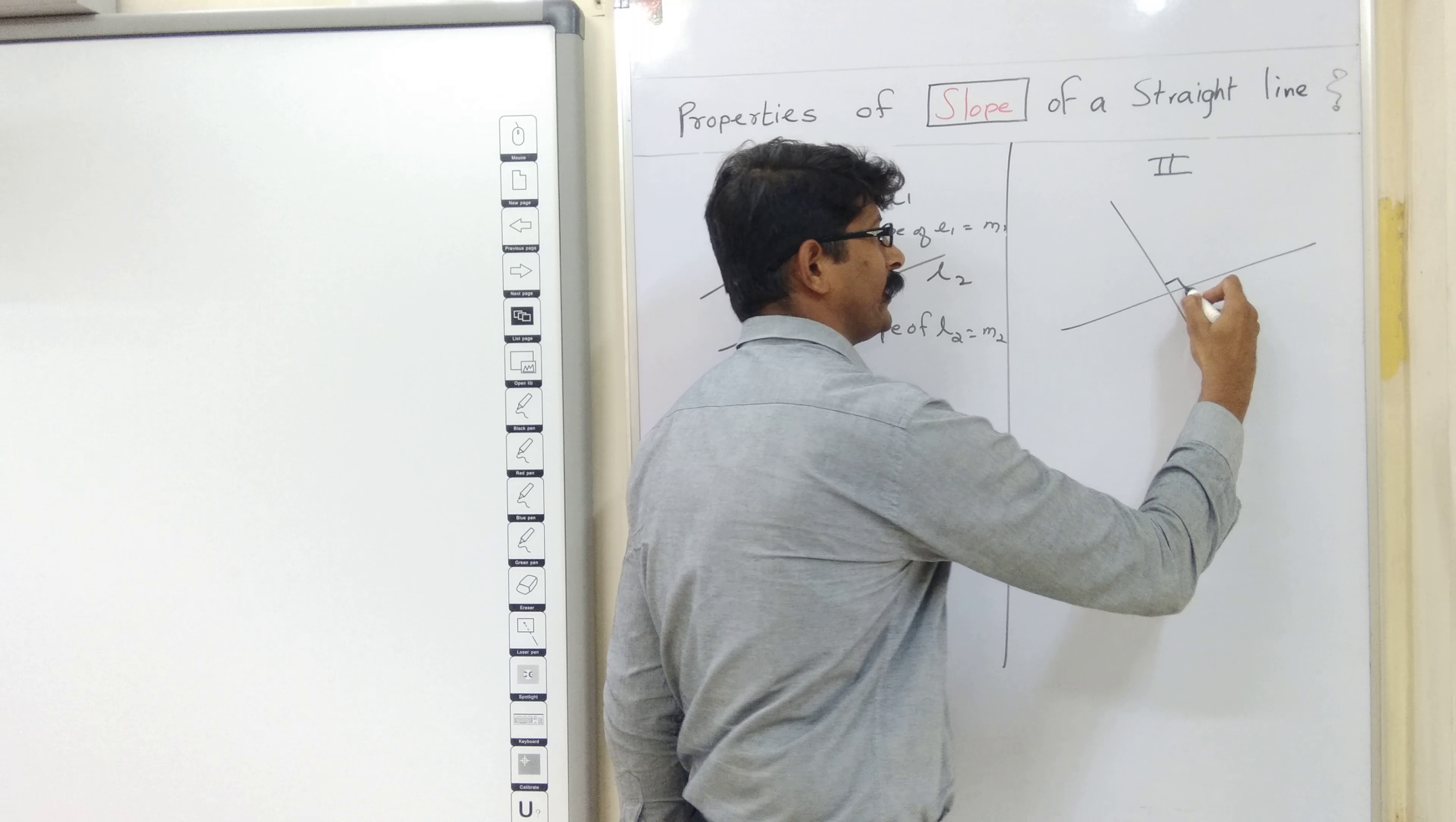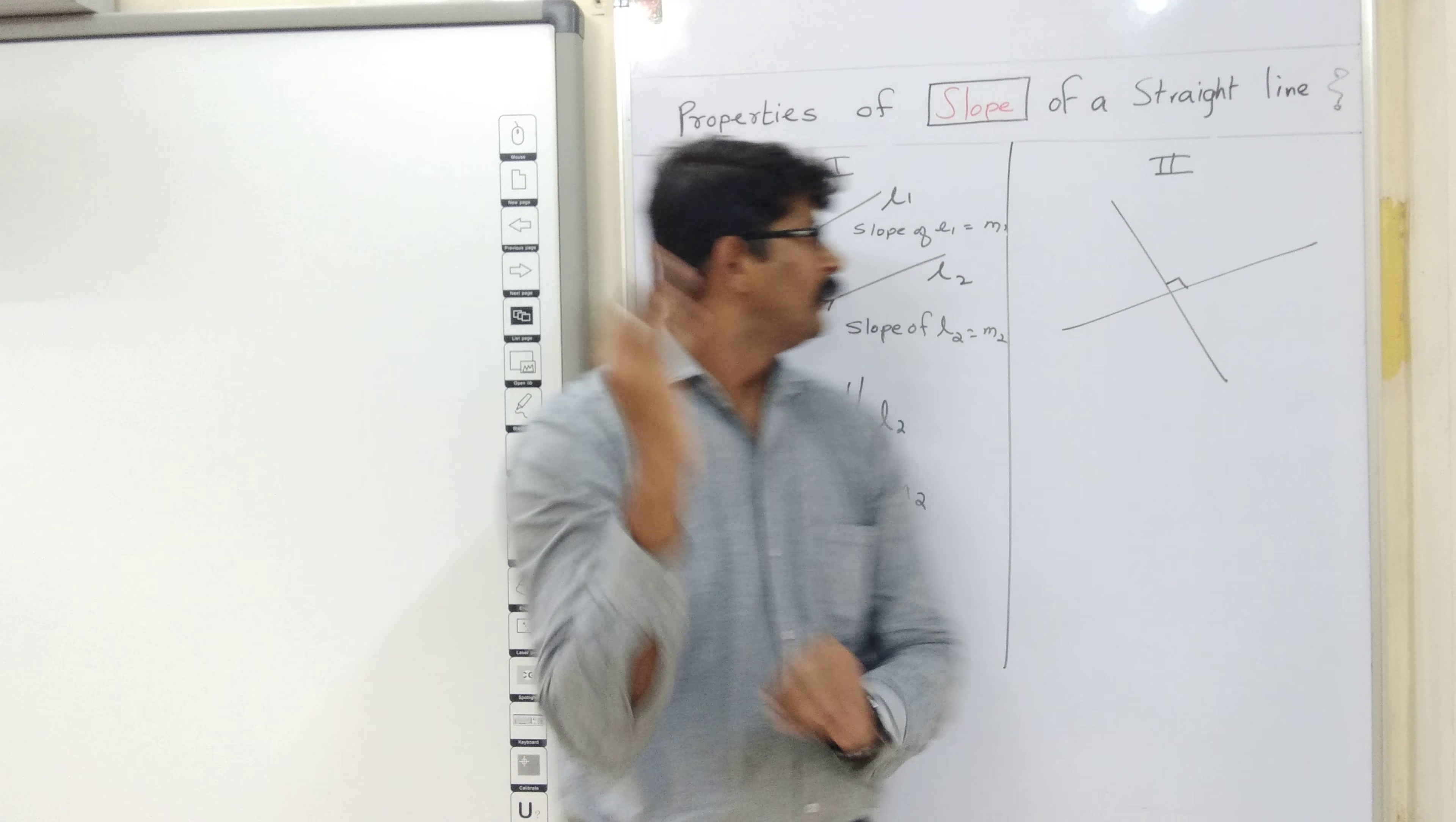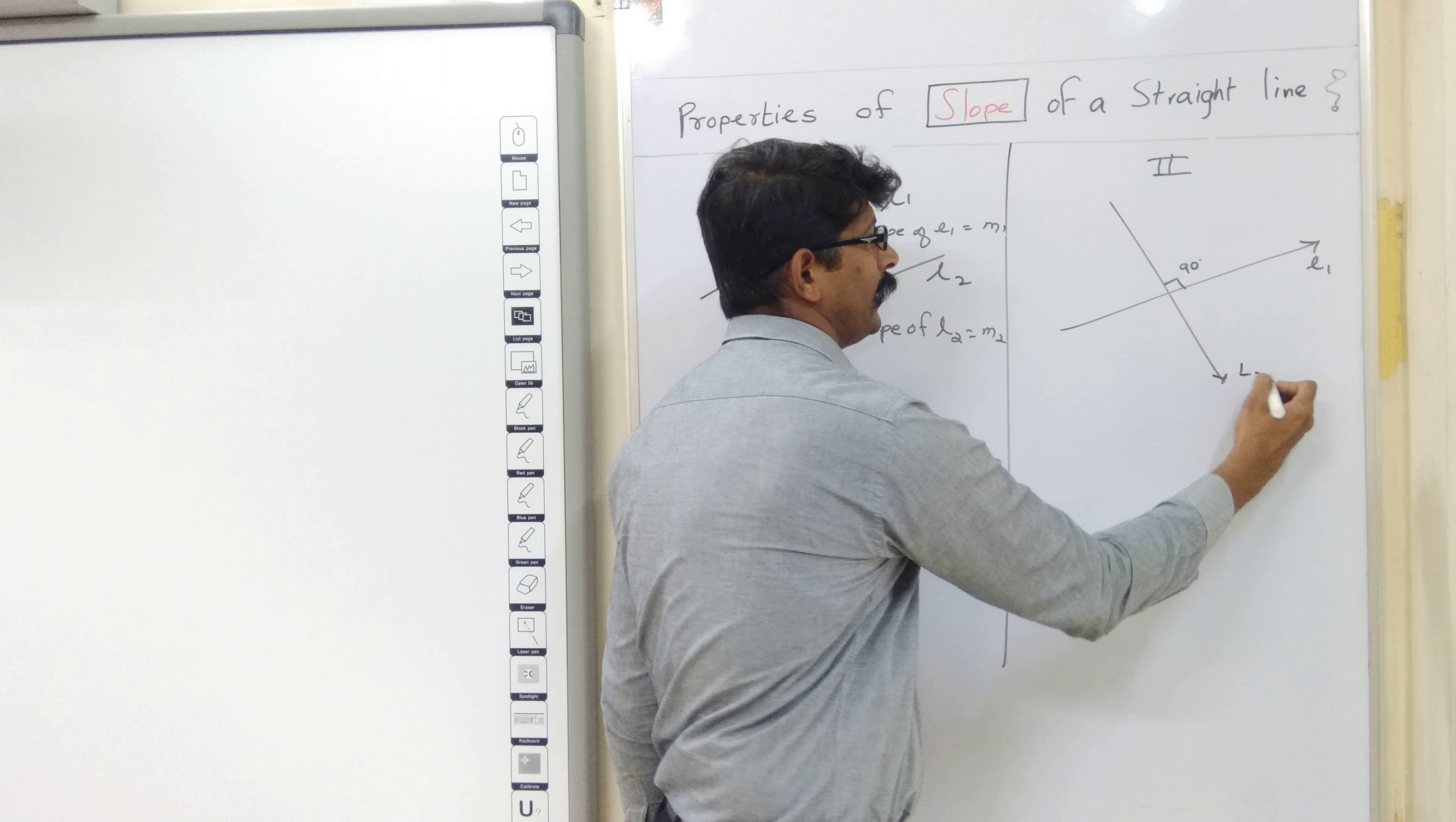So, this is perpendicular. Perpendicular means making 90 degree angle with each other. So, it's 90 degree angle over here. So, let's say this is l1 and let's say this is l2.